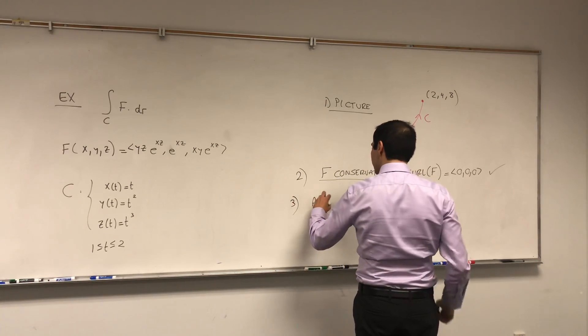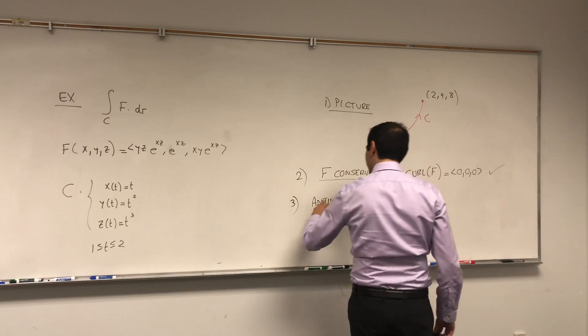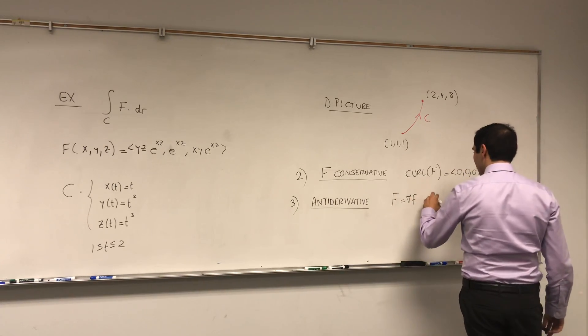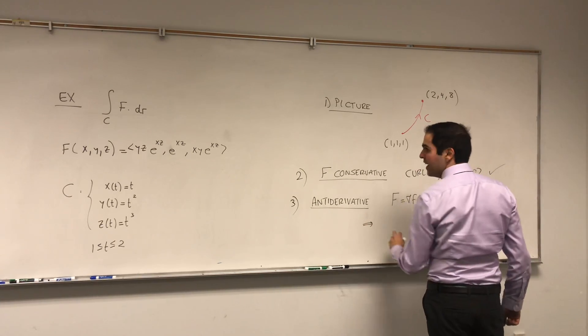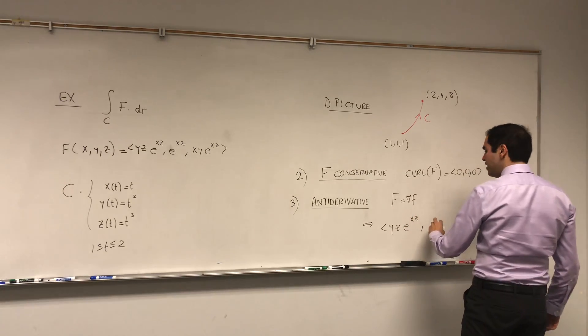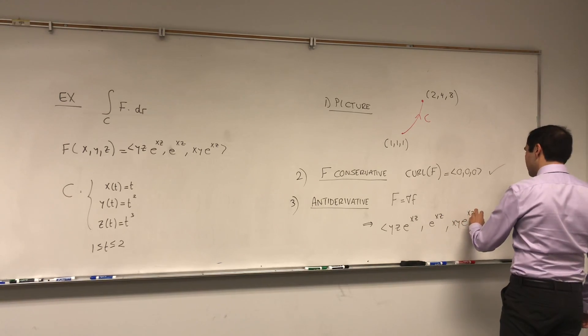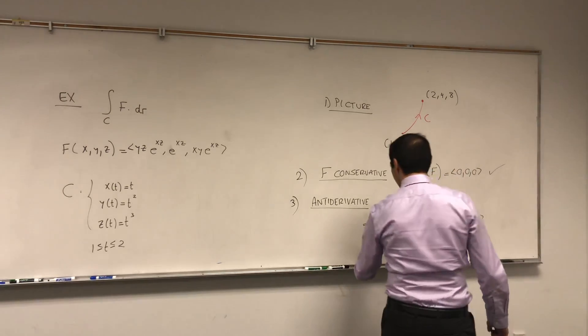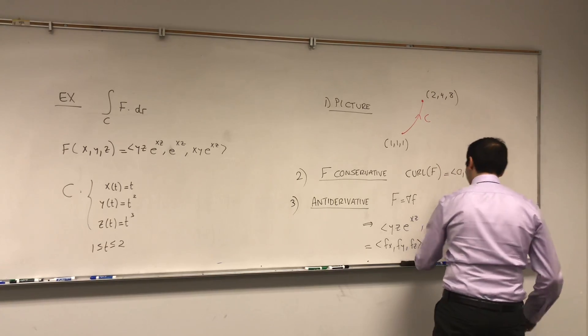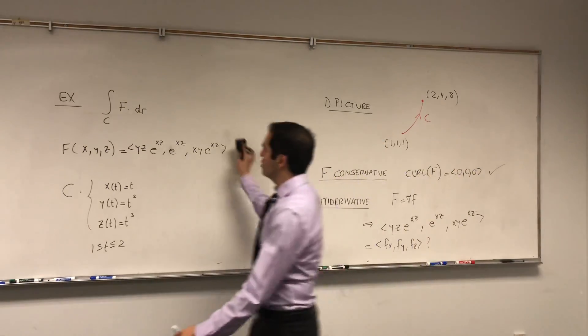Because the whole point is just to figure out how to use this, the fundamental theorem of line integrals. Okay, then the next step is to find an antiderivative, namely, check whether or not f is the gradient of some function or not. In other words, can we write yz e to the xz, e to the xz, and xy e to the xz, in the form fx, fy, fz. Well, this tells you, yes, we can.